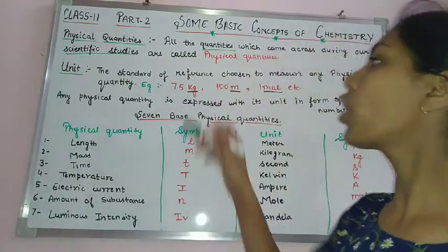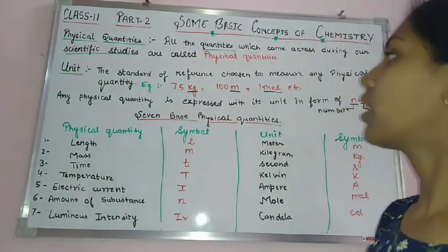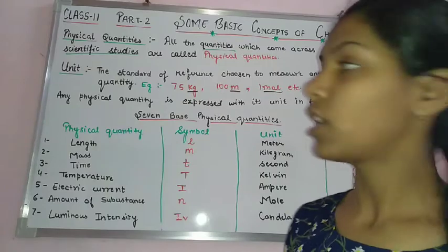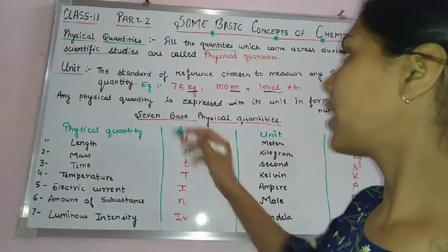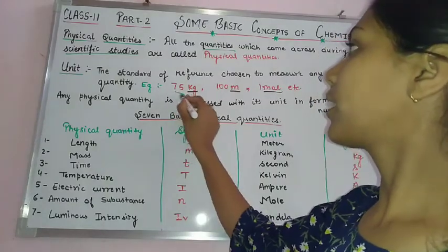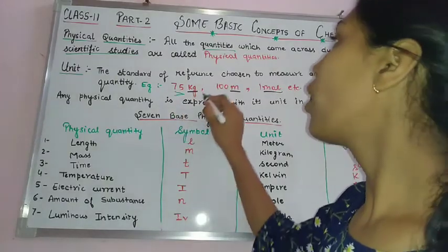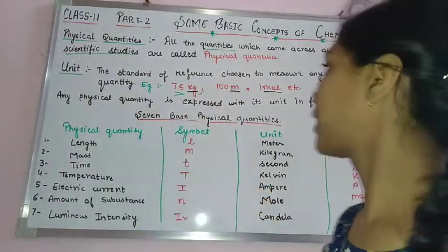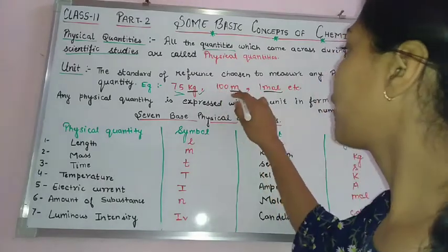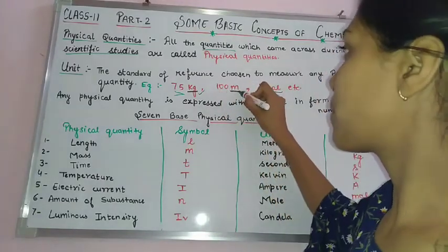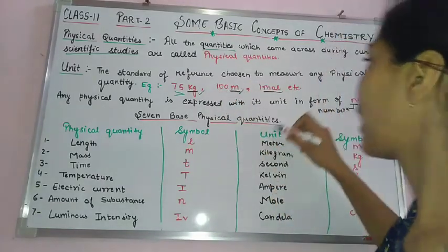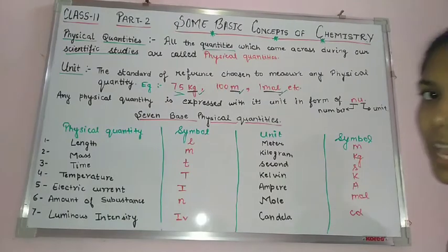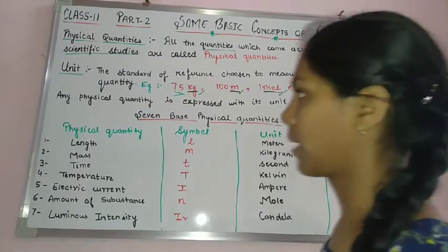For example, 75 kg — here 75 is the number and kg is the unit. 100 m is another example where m is the unit. One mole is also a unit. Any physical quantity is expressed with its unit, and there are many such examples.